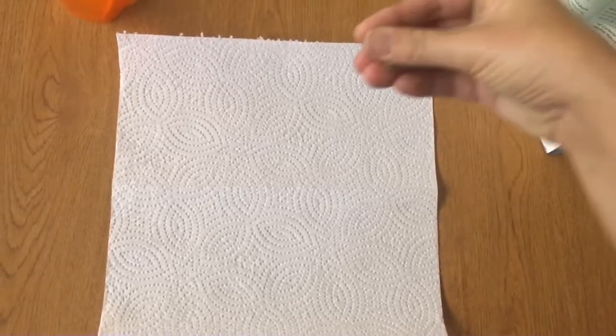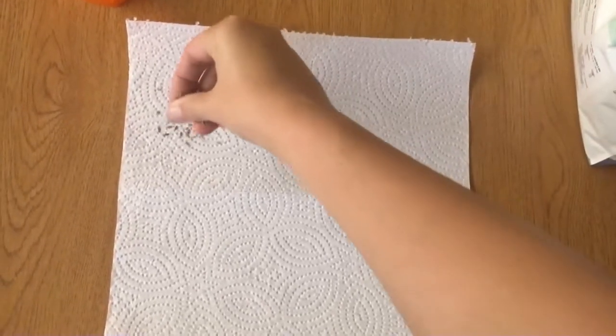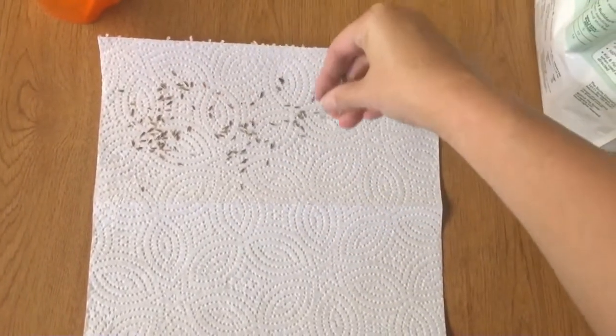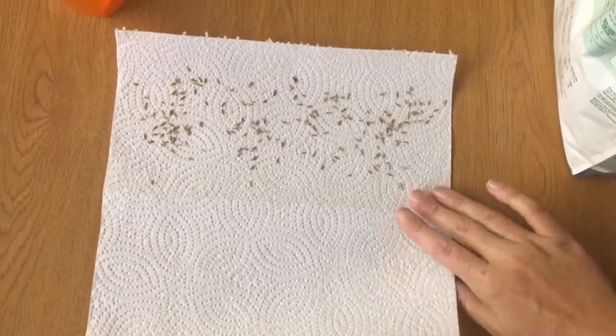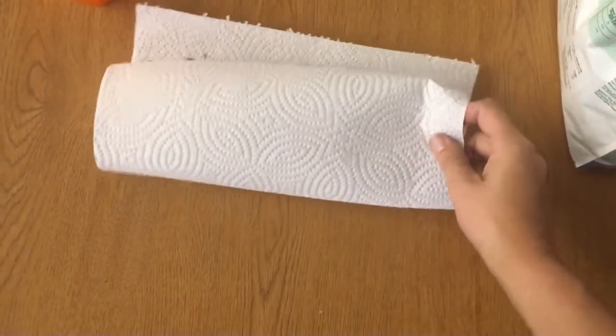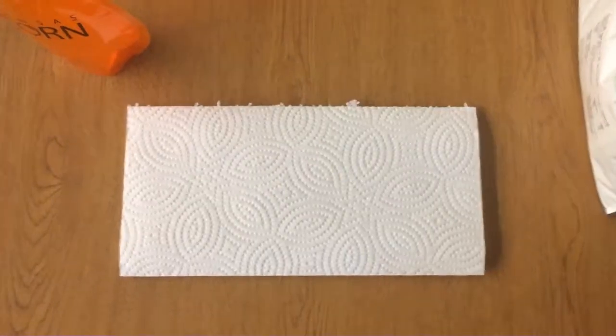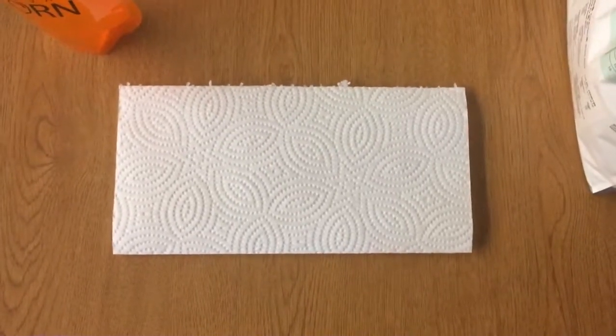Next, you're going to take a pinch of grass seed and spread it out over half of the paper towel. Next, you'll fold it over so that the seeds are completely encased within the paper towel.